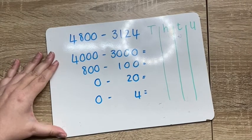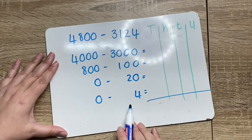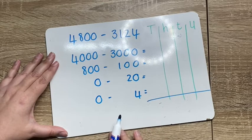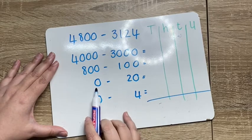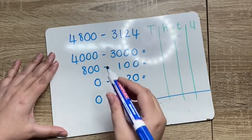So where do we always start? The units. Can I say 0 take away 4? No, because I have nothing. So I can't take 4 away. I can't borrow from the tens because there are no tens. So I'm going to borrow from the hundred.